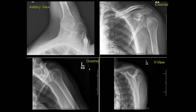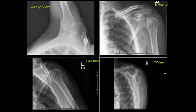Here's another patient who was posteriorly dislocated. On the axillary view, the humeral head appears posterior to the glenoid. On the externally rotated view, the humerus is still somewhat internally rotated. On the grashey view, the image was attempted to be made tangential to the joint space, but when you're posteriorly dislocated the humeral head overlaps with the glenoid. And here's a Y view where the humerus is just offset to the glenoid.